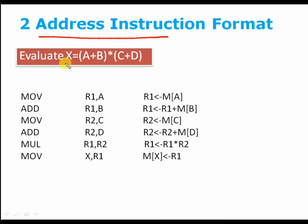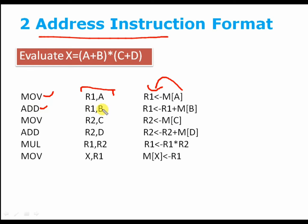Two address instruction format. With the same example, we are going to evaluate X with the help of two address instruction format, meaning we are going to use two operands only. The first operation is move — we will move memory of A to register R1. Then we will perform an addition operation between R1 and memory of B.